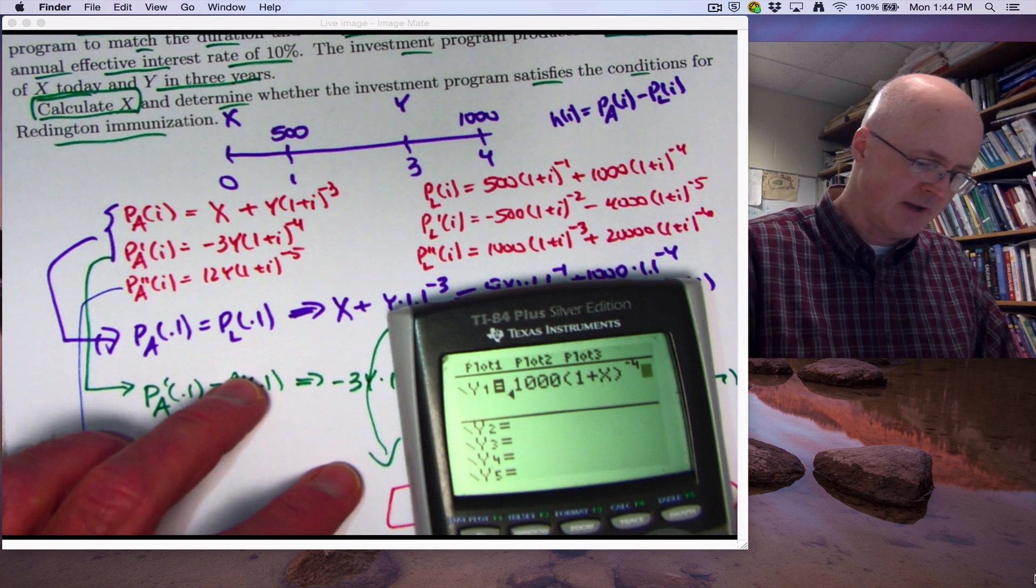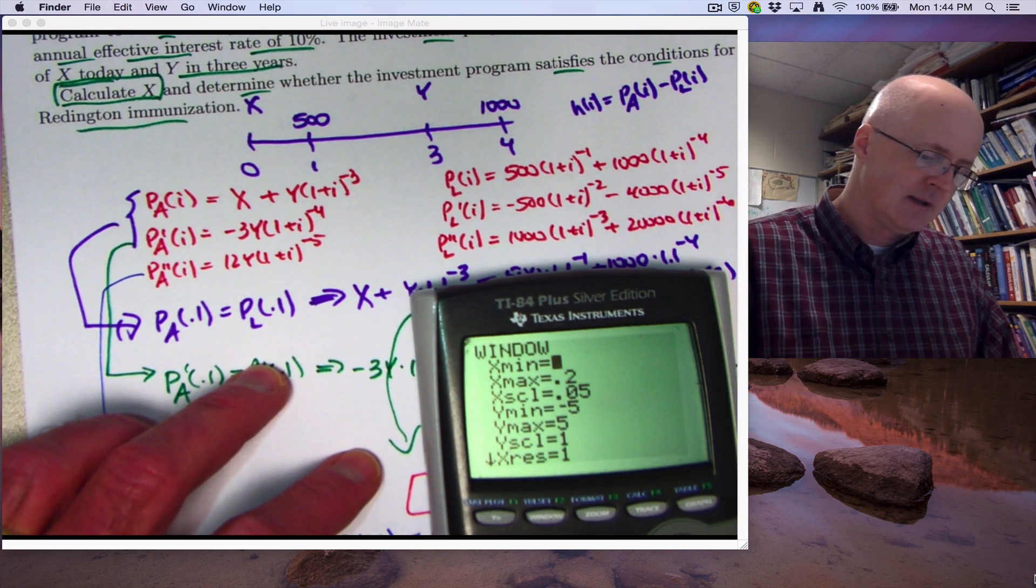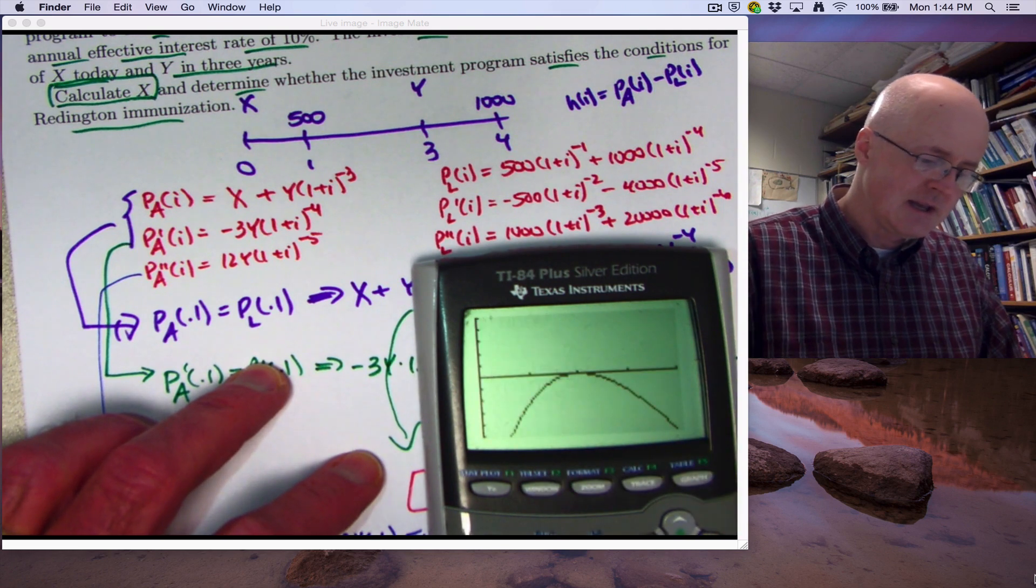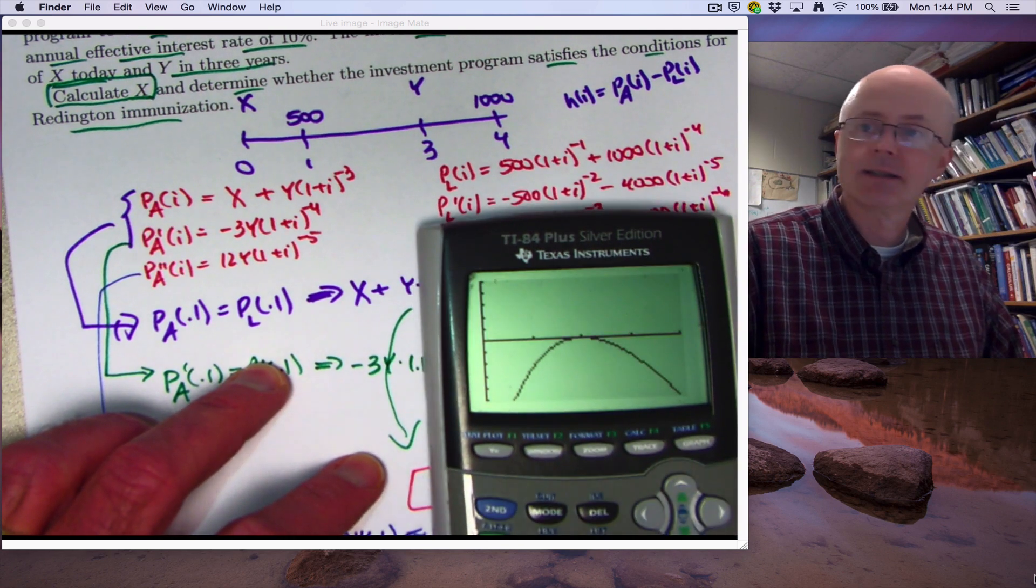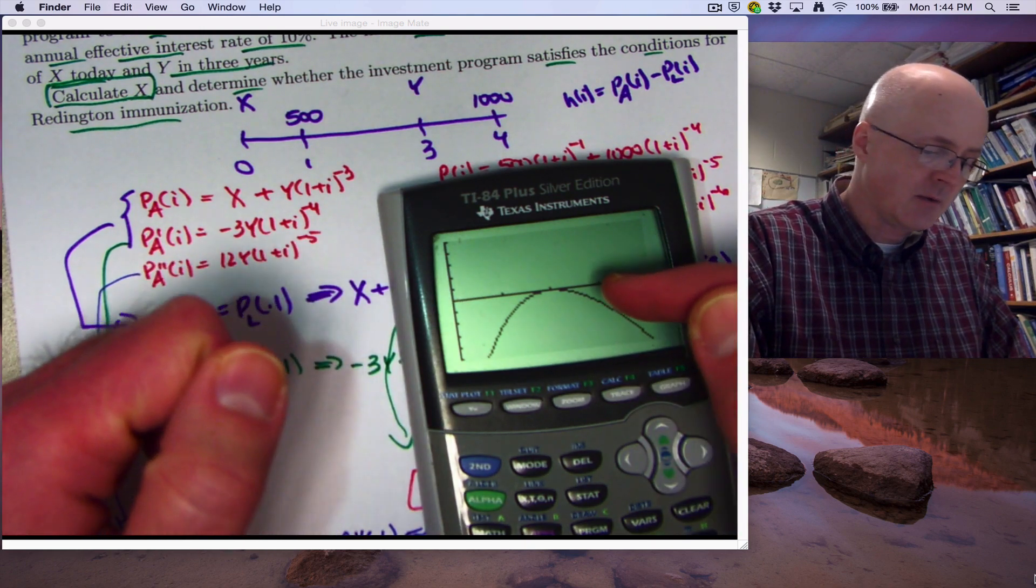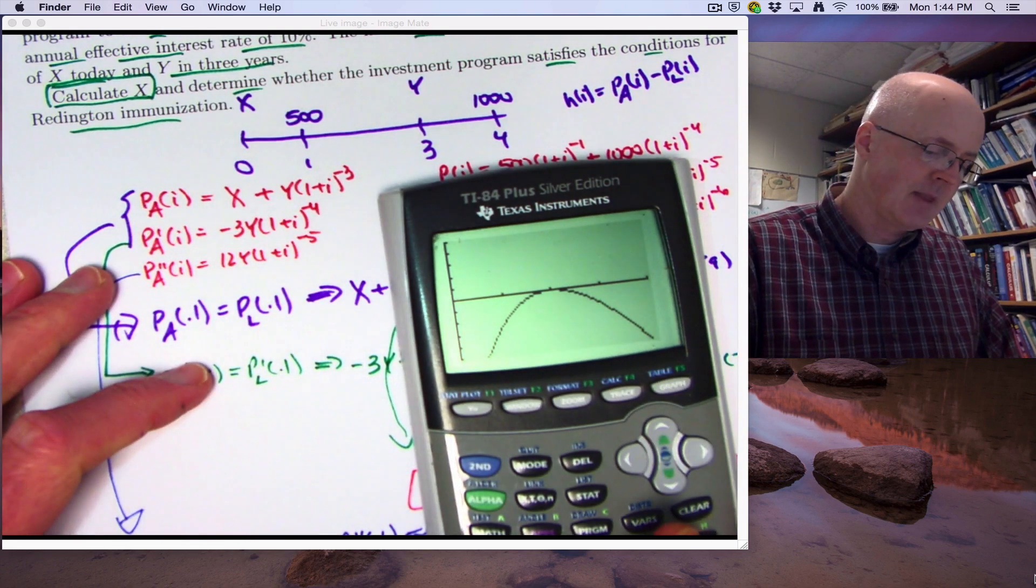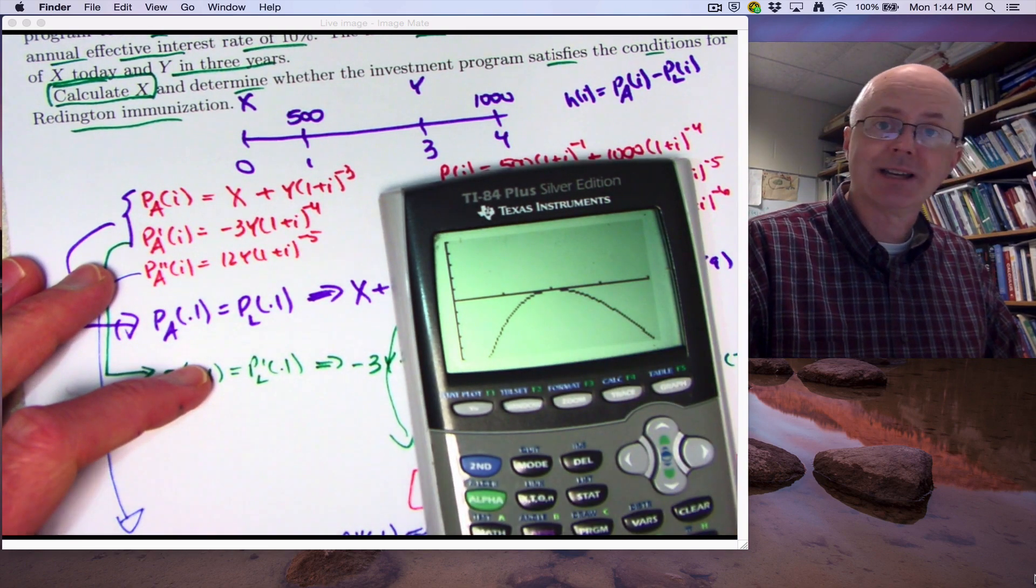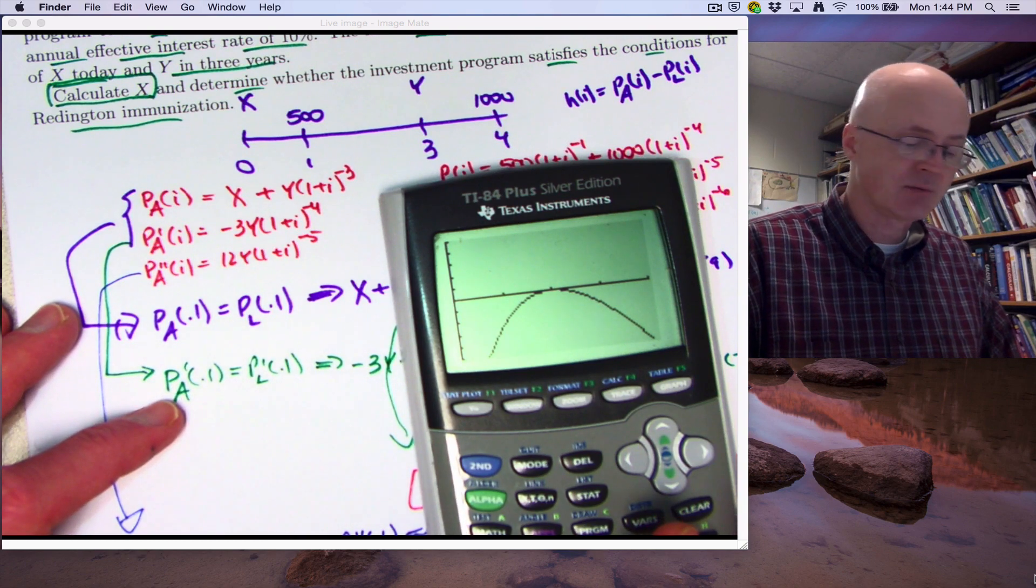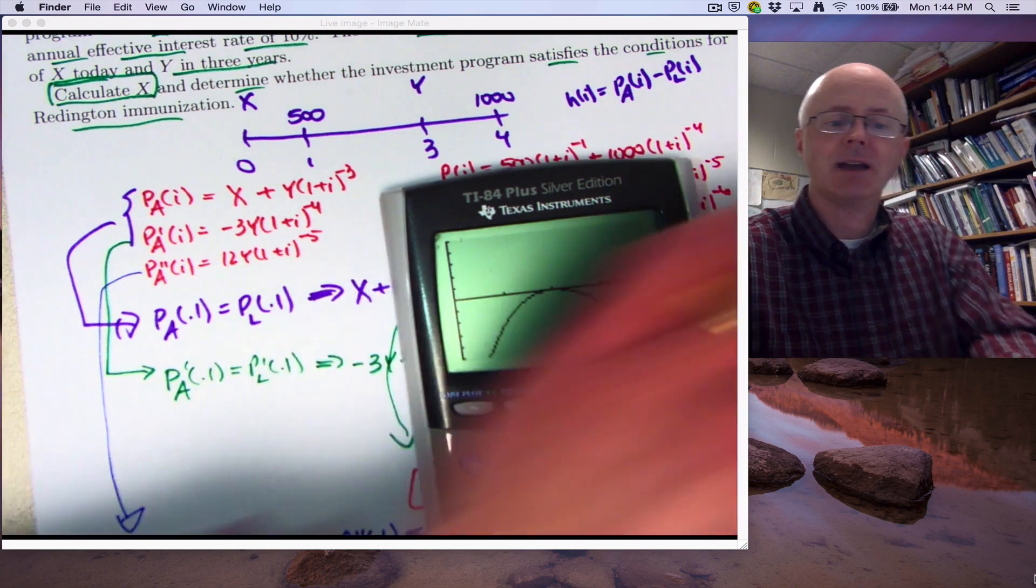And if you graph this function, which is h of i on a window approximately like this, notice it's centered on 0.1. Where y goes from, say, negative 5 to 5, you will see that the graph, I've already got it there, is concave down. The second derivative is negative. You see it does have a local maximum at i equals 0.1. We really want a local minimum instead. Because this is showing the graph of h of i is negative, which is telling us our assets are in a deficit position with respect to our liabilities. We really want a surplus. We really want the graph to be positive instead. So that's it. Thanks for watching.